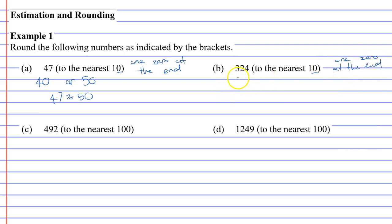So we're going to round 324 to either 320 or if we round it up it would become 330. Notice that we've got 32 tens or 33 tens.